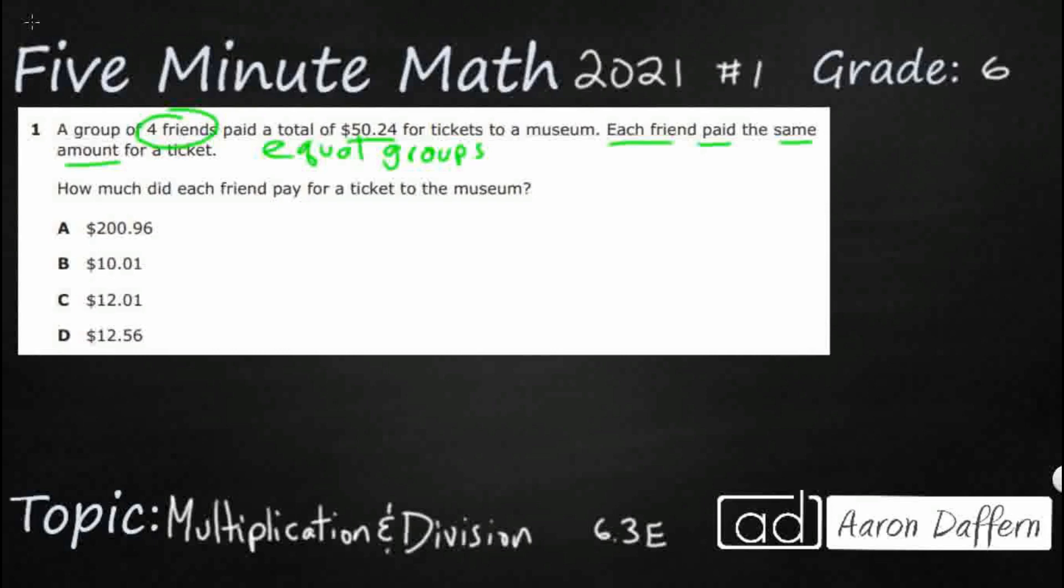The only trick here, if there is one, is that we have a decimal in the dividend, 50.24. So what we need to do is make sure we have a decimal up on our division bar as our answer, so that in that same spot in the quotient we are going to have a decimal.